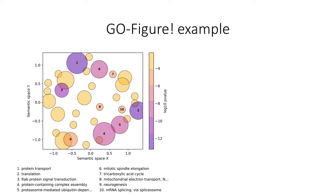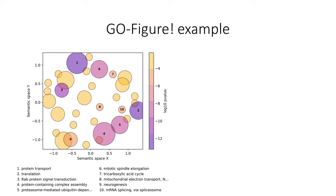After all this, GoFigure produces a scatterplot. This example is based on the default settings, so each group is colored based on the p-value of the representative term and the size indicates how many GO terms are part of each group. When we take a look at group six for example, we see that it is represented by the term mitotic spindle elongation. The other terms are mitotic spindle organization and mitotic G2 DNA damage checkpoint, and as seen above, they are relatively close to each other on the GO DAG. In this case GoFigure chose mitotic spindle elongation because its p-value is simply three times as low as the others.